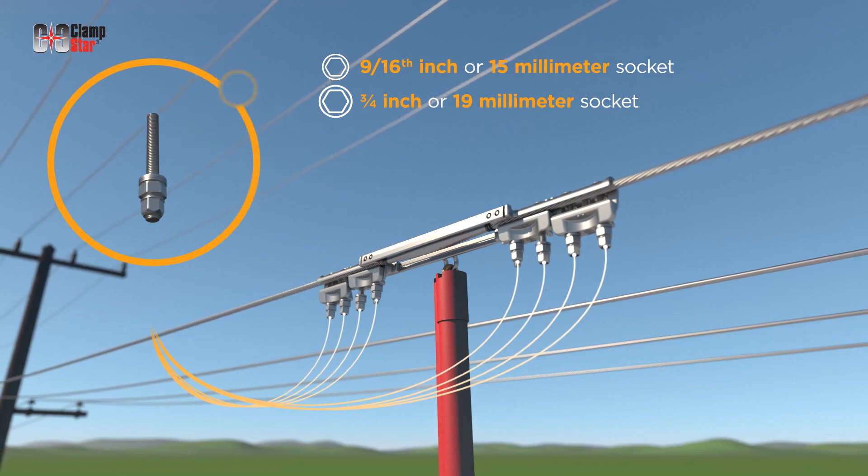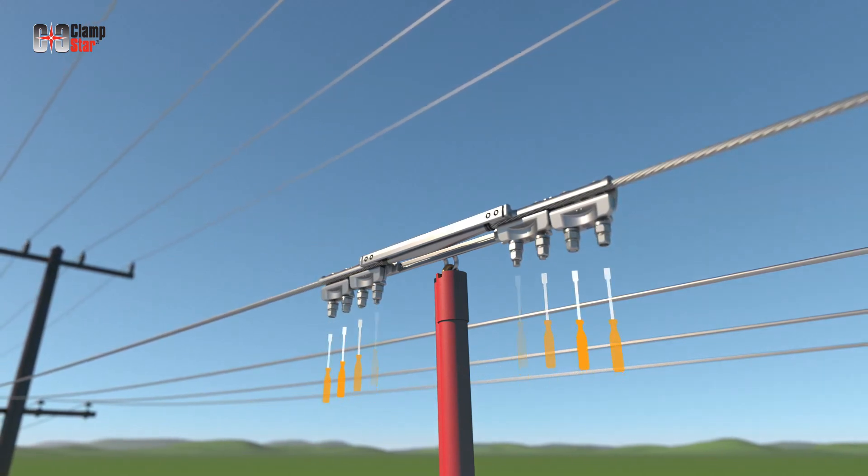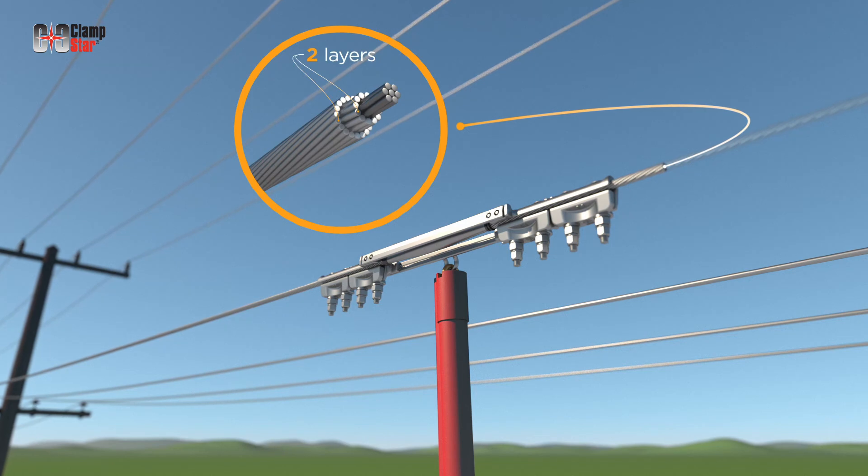Beginning at the innermost fastener, tighten the nuts in a linear fashion equivalent to the number of layers of aluminum stranding over the core.